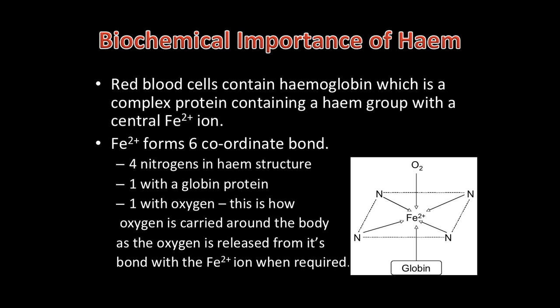Looking at complex ions in a biological context, red blood cells contain haemoglobin, which is a complex protein that consists of 4 polypeptides which each contain a heme group. The heme group has a central Fe2+ ion and this can form 6 coordinate bonds. 4 of these are with nitrogen atoms in the heme structure and a further coordinate bond is with a globin protein.